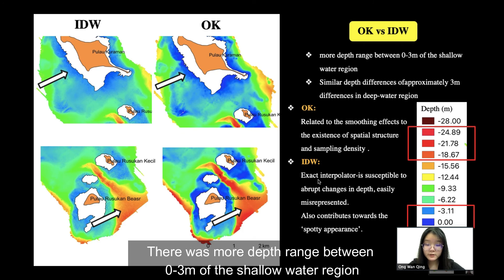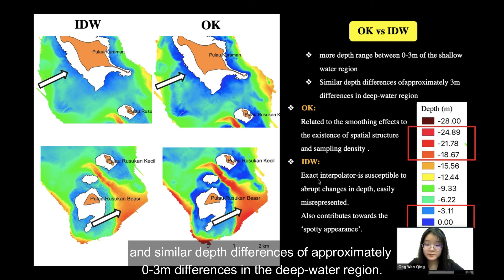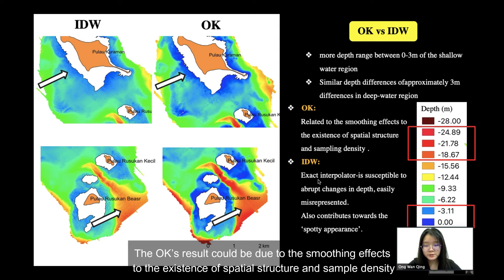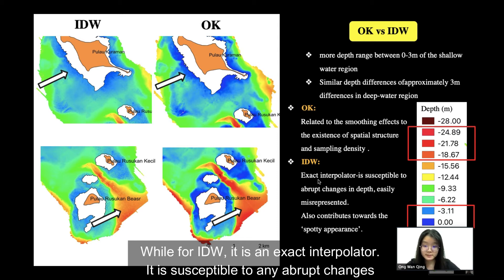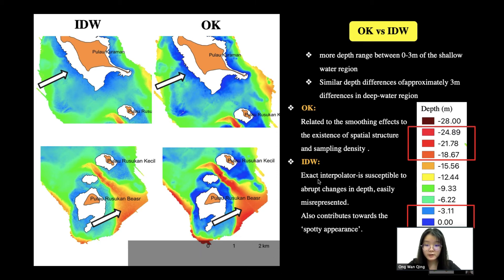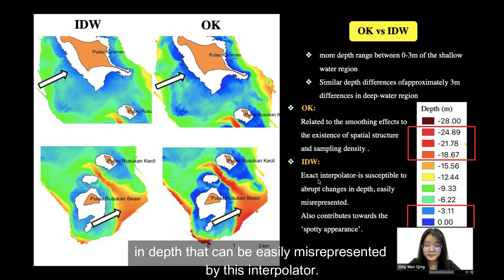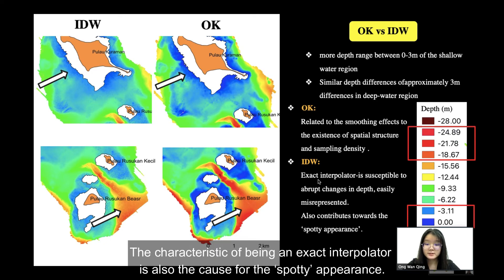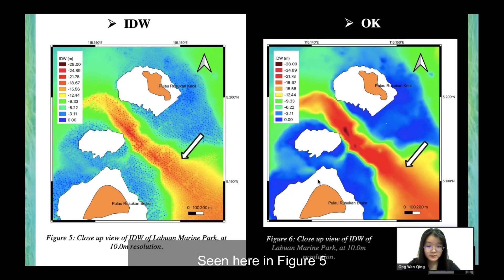To generalize the findings, there were more depth range differences between 0 to 3 meters in the shallow water region, and similar depth differences of approximately 0 to 3 meters in the deep water region. Kriging's results could be due to the smoothing effect from the existence of spatial structure and sample density, while IDW is an exact interpolator, susceptible to abrupt changes in depth that can be easily misinterpreted. The characteristic of being an exact interpolator also caused the spotty appearances seen in Figure 5.